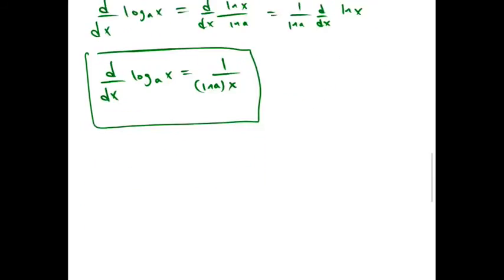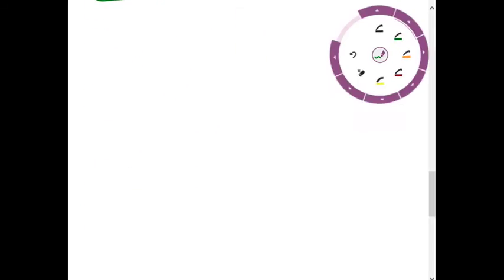We have other inverse functions such as arc sine x, which we can also write as inverse sine. We can get a derivative for all of these. I'm not going to calculate all of them, but I'll just list them. The derivative of inverse sine is 1 over square root of 1 minus x squared.